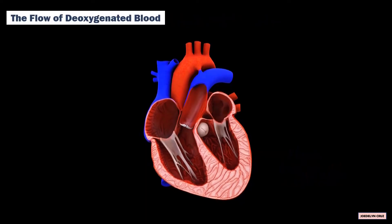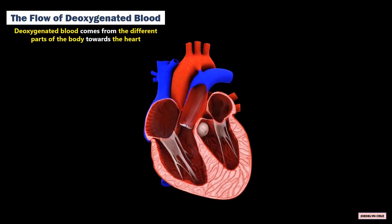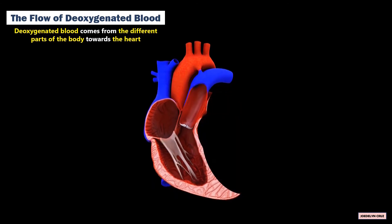The Flow of the Oxygenated Blood. The oxygenated blood comes from the different parts of the body towards the heart. This is what happened during the flow of the oxygenated blood.